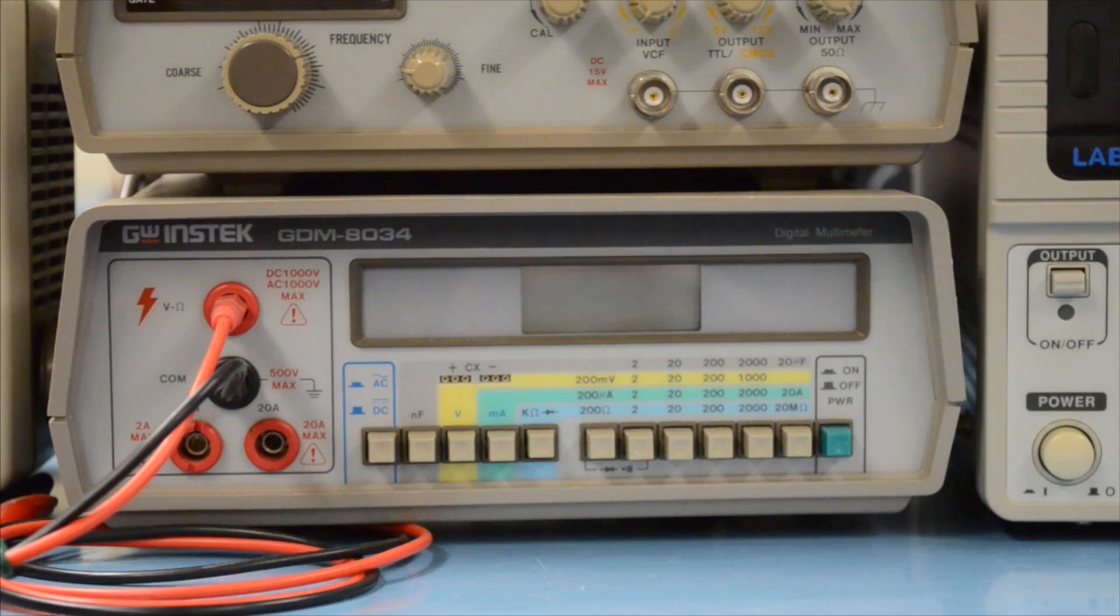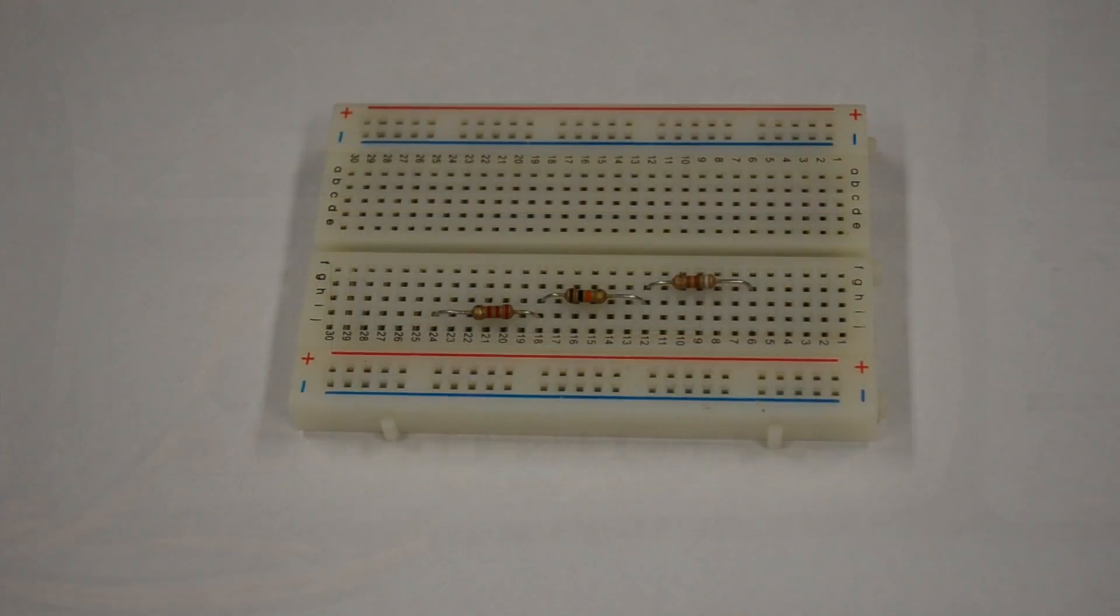For each setting, you can adjust the scale of the multimeter's readings using these buttons here. For example, say you're trying to find the resistance across these three resistors. We know one's a 10 kilo ohm resistor, one's a 2 kilo ohm resistor, and one's a 1 kilo ohm resistor, but we're going to pretend we don't know.